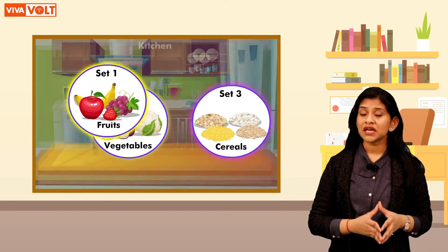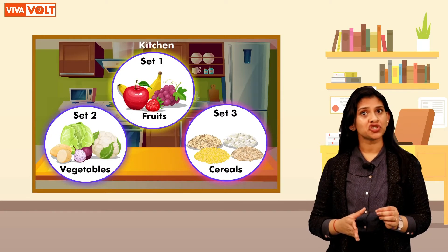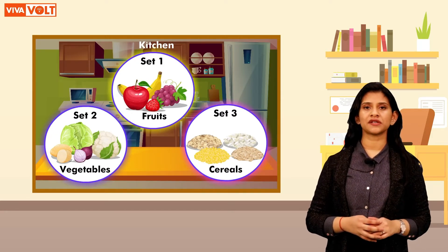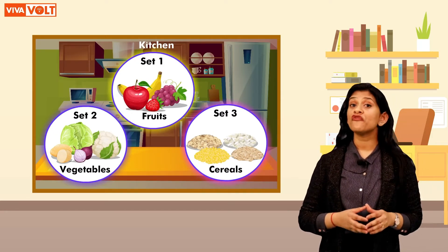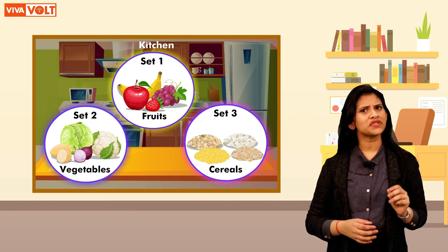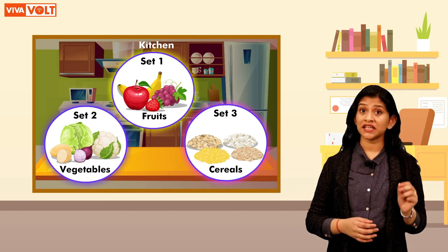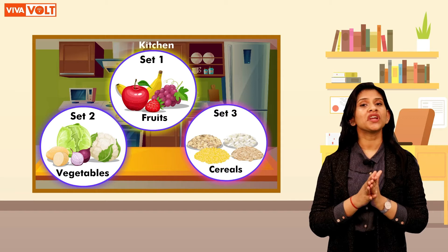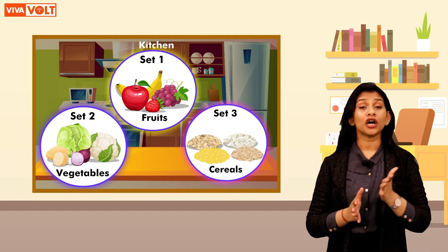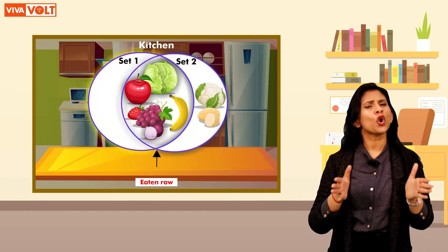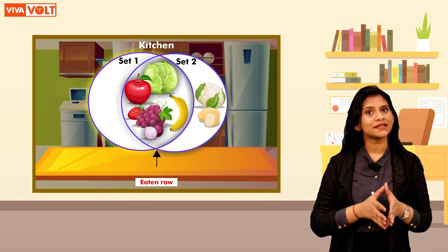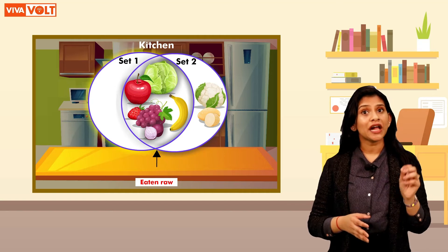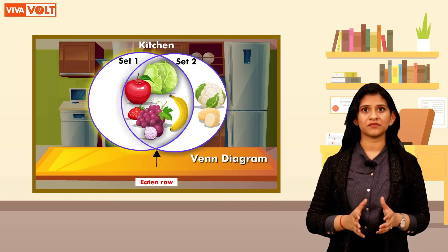These sets are used to show the relationship between 2 or 3 groups. For example, if we want to select the things that are generally eaten raw in the kitchen, we can either make a new set or we can just overlap the existing sets. We do this with the help of Venn Diagrams.